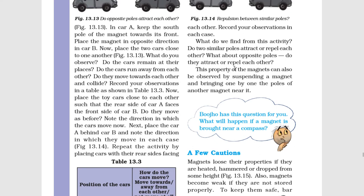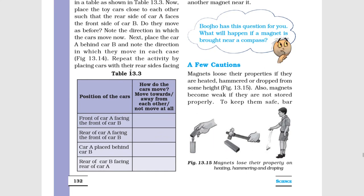This property of the magnets can also be observed by suspending a magnet and bringing one by one the poles of another magnet near it. Chumbakko ka ye gudh ek chumbak ko latka kar tatha ek dusare chumbak ke uttri tatha dakshini dhru ko ek-ek karke iske samip laa kar bhi dekha ja sakta hai.